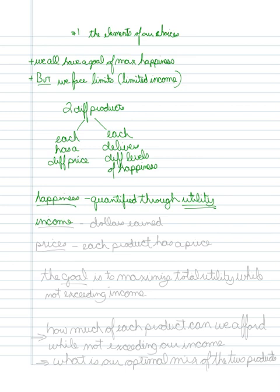Then, our income. That would just be the dollars that you're earning. How much total money do you have coming in? Prices. Each product has a price.